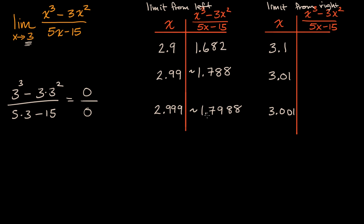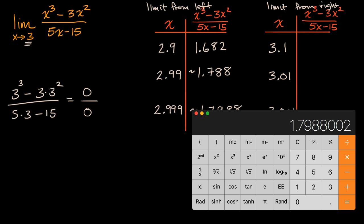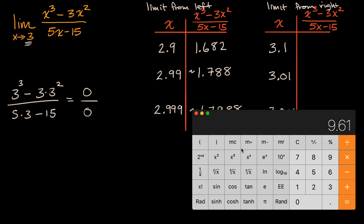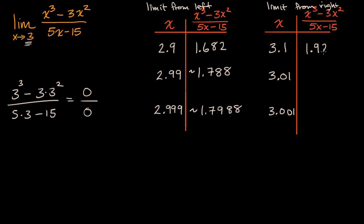It seems to be getting closer and closer to 1.8. So this is our limit from the left. Now let's try the limit from the right. When x is 3.1: 3.1 cubed minus 3 times 3.1 squared, divided by 5 times 3.1 minus 15, gives us 1.922.